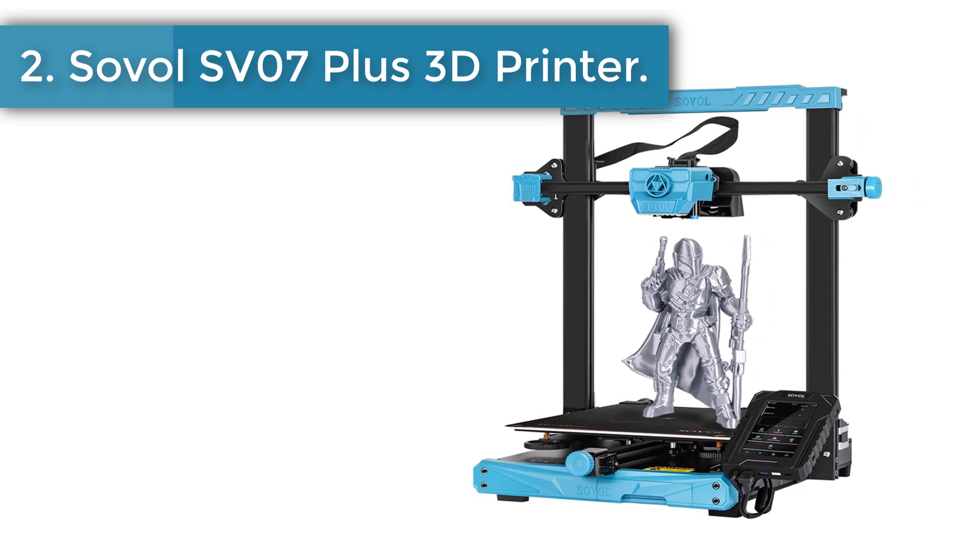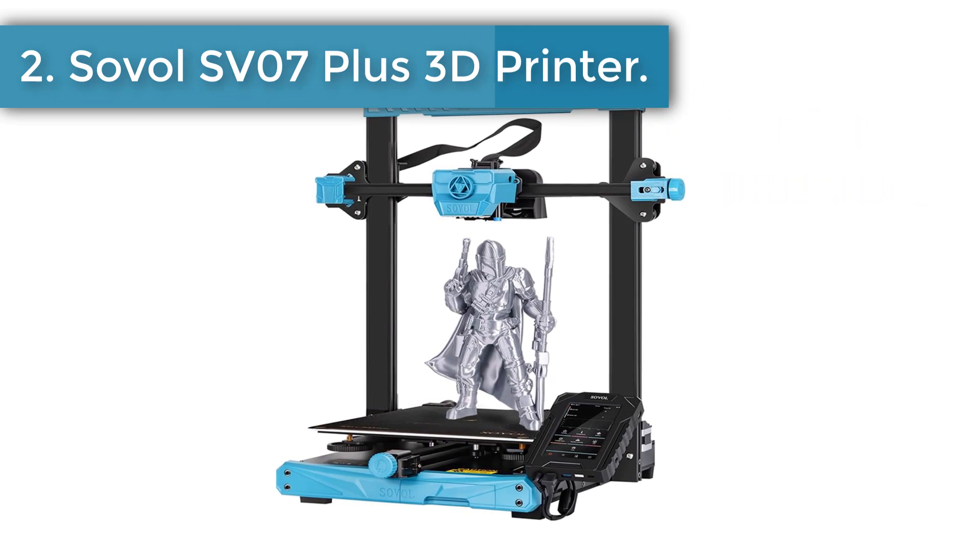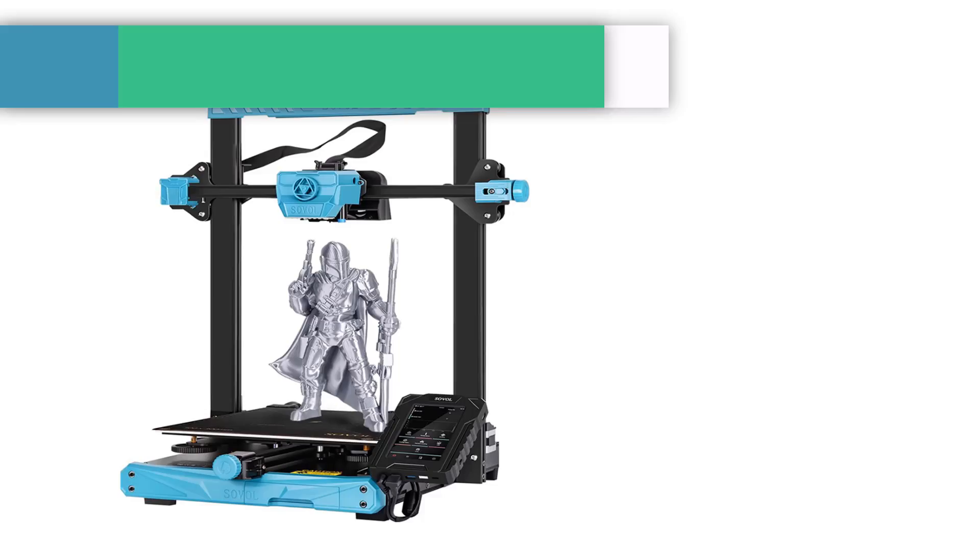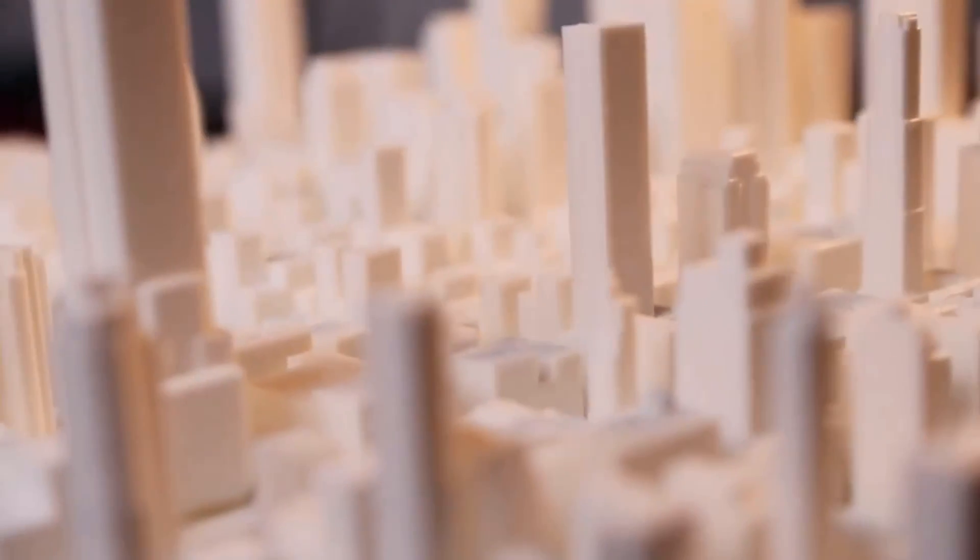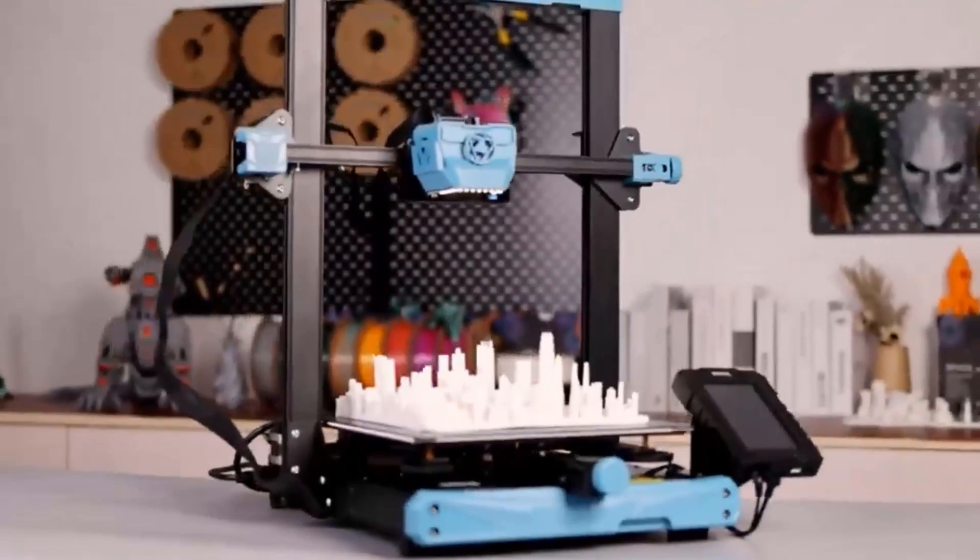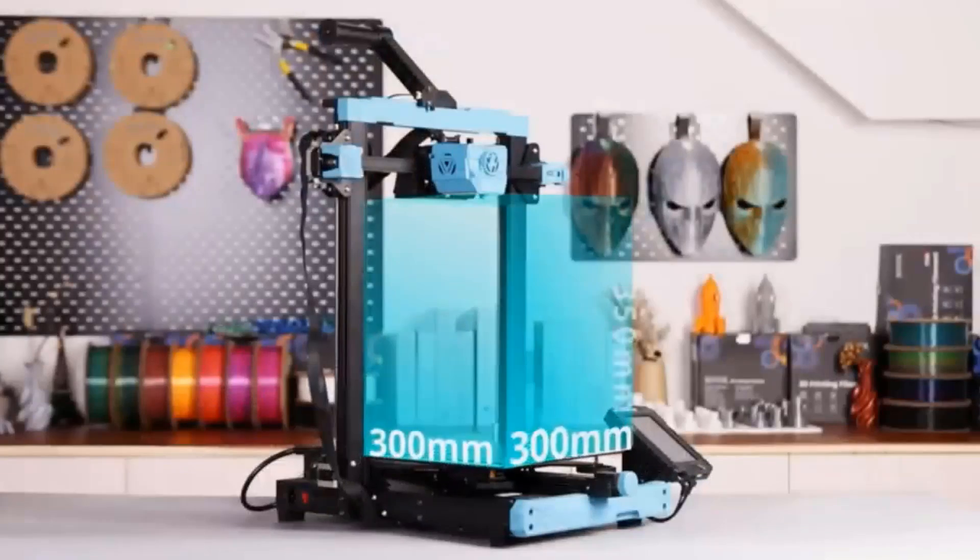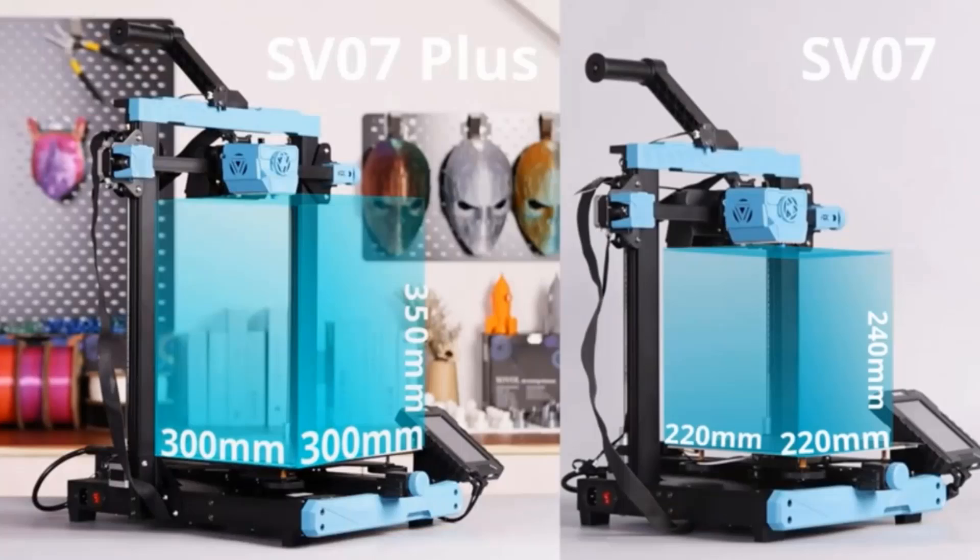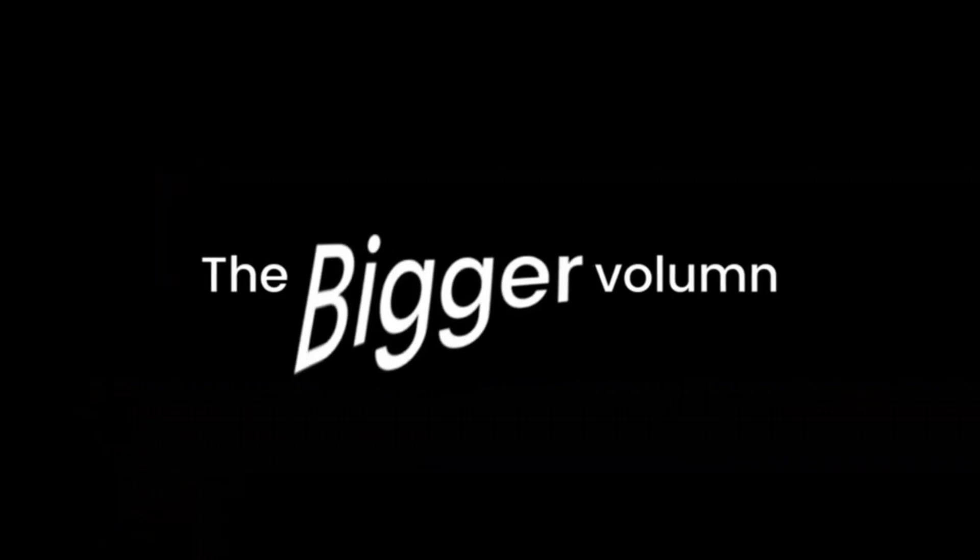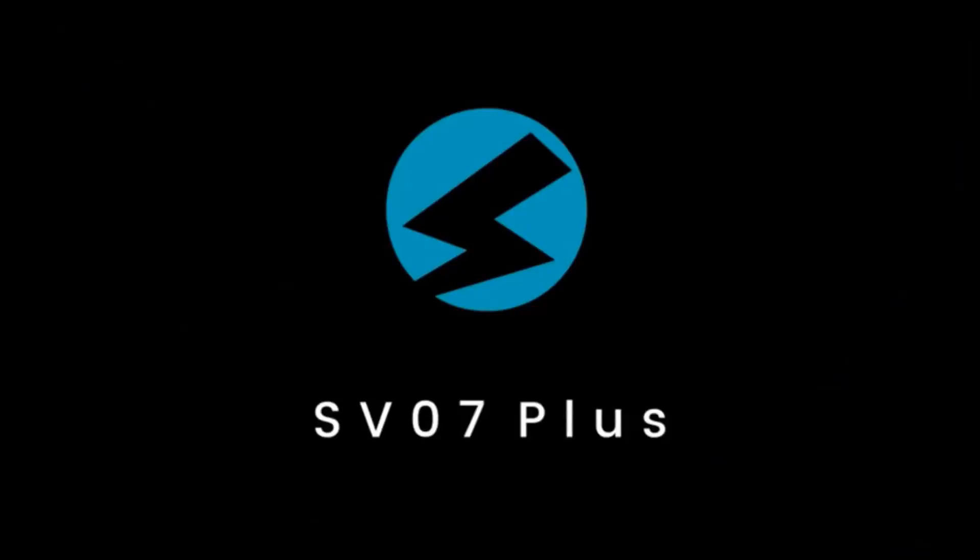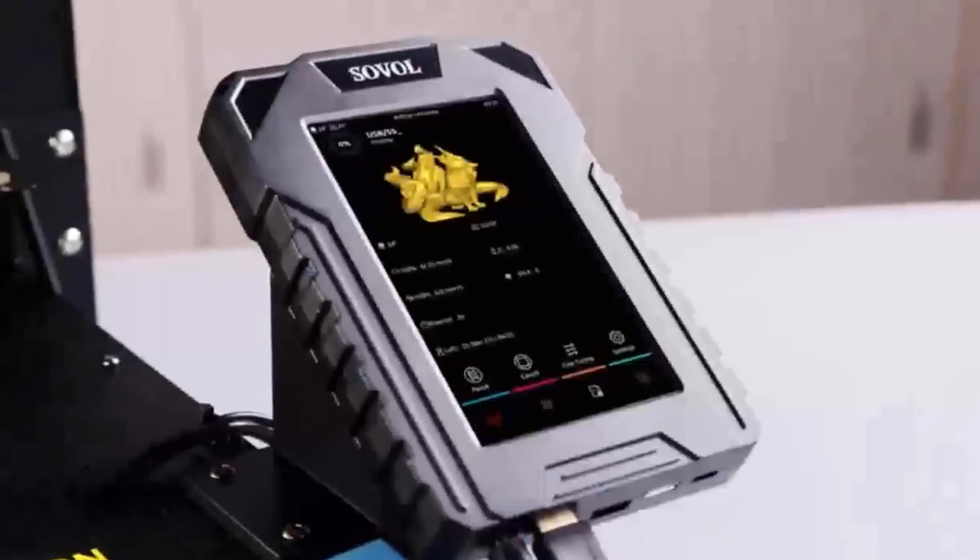Number 2. Sovol SV07 Plus 3D Printer. Clipper firmware allows SV07 Plus to speed up to 500 mm per second at maximum. SV07 Plus is equipped with 480 x 800 high-resolution 5-inch touchscreen which brings you totally different experience from knob screen and normal 4.3-inch touchscreen in the market. Clipper also offers a range of function options, including the height map and input shaper, while you could DIY based on your specific needs.